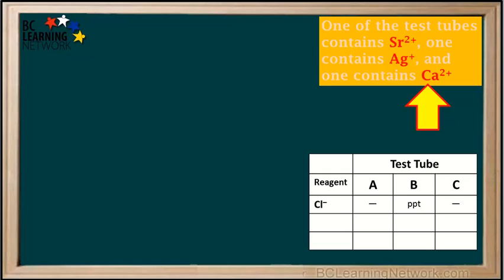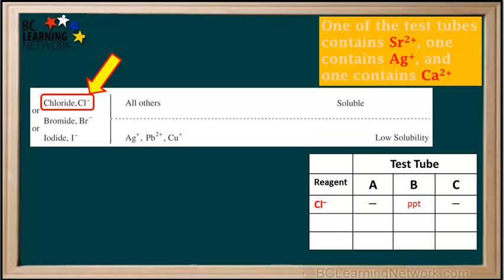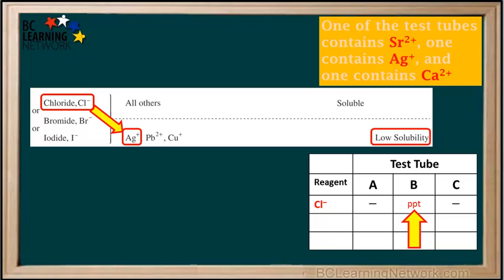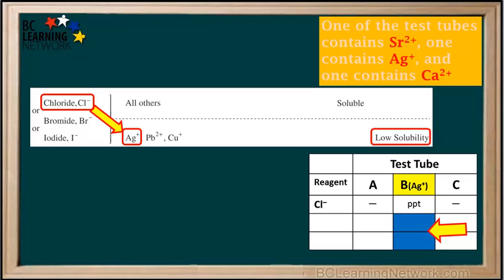The three ions in the test tubes are strontium, silver, and calcium, and only the solution in test tube B formed a precipitate with chloride. We look up chloride on the solubility table and see that it forms a low solubility compound with Ag+. Cl- is soluble with all cations other than Ag+, Pb2+, or Cu+, which includes strontium and calcium. So because test tube B was the only one that formed a precipitate with Cl-, test tube B must contain the silver ions. We write Ag+ by B in the table, and since we know test tube B contains silver ions, we don't need to test it with any more reagents.